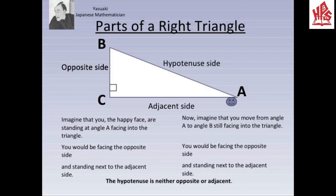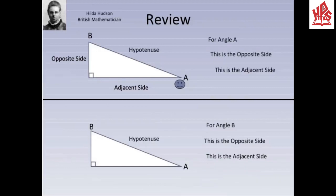Now imagine that you move from angle A to angle B, still facing into the triangle. Side AC is opposite to your face, and you are standing next to the adjacent side BC. Hence, for angle B, side AC is the opposite side and side BC is the adjacent side. As discussed, for angle A, BC is the opposite side and AC is the adjacent side.